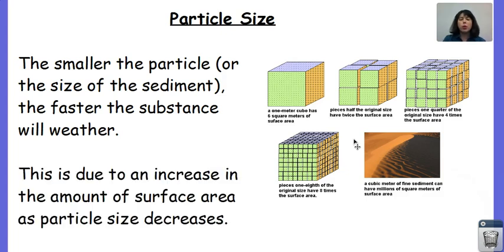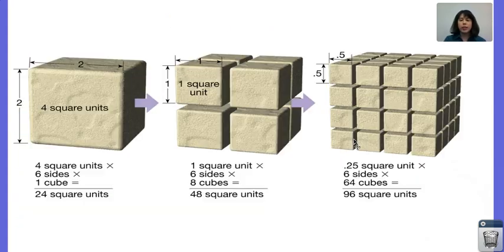The reason that we have more weathering is because we have an increase in the amount of surface area as the particle size decreases. So if you look right here in my next diagram, if we have this one cube, now we have the same volume of materials in each one of these three. However, more surface area is exposed.